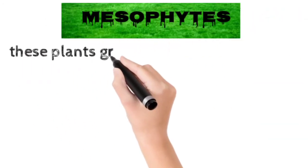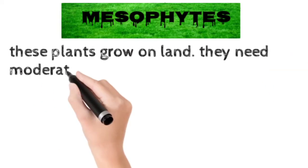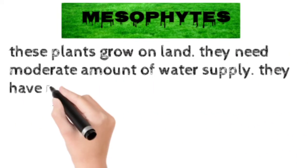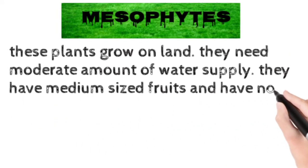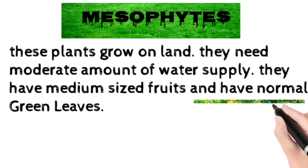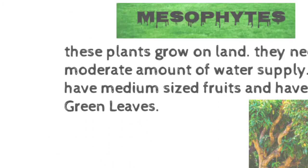Number 1: Mesophytes. These plants grow on land. They need a moderate amount of water supply. They have medium-sized roots and normal green leaves. Mango tree is its example.